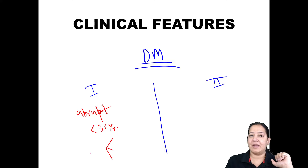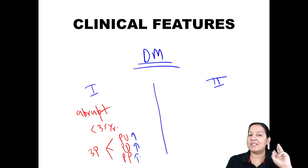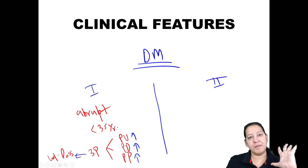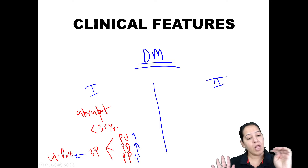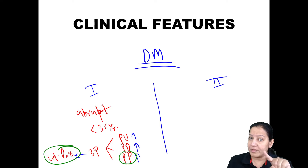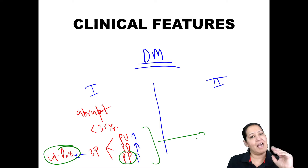In type 1 diabetes, the onset is almost abrupt and the age of diagnosis is usually less than 35 years. The patient comes with the classic triple P: polyuria, polydipsia, and polyphagia — increased urination, increased thirst, and increased hunger. The fourth symptom is weight loss, which is not included in the classical triad but is present.